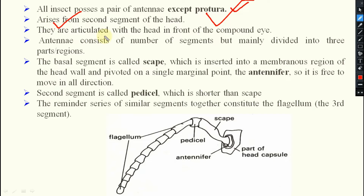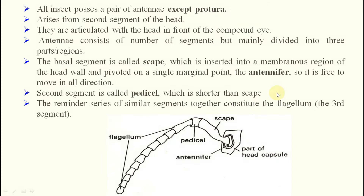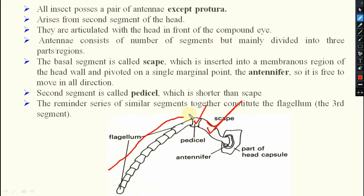The antenna arises from the second segment of the head, as we have already discussed in the different parts of the head. They are articulated with the head in front of the compound eye. Antenna consists of a number of segments, but mainly divided into three parts: the first one is your scape, second one is your pedicel, and third one is your flagellum. Pedicel is the smallest segment and flagellum is generally the longest segment.